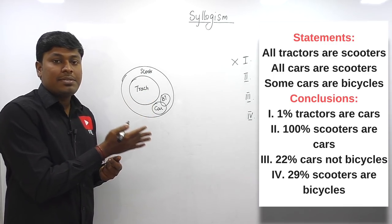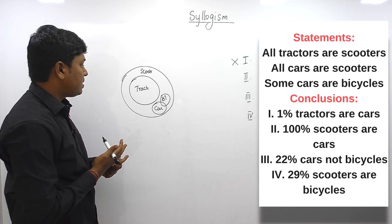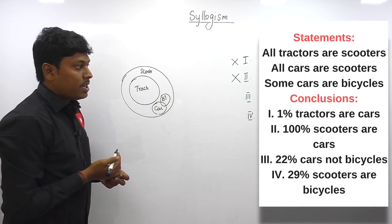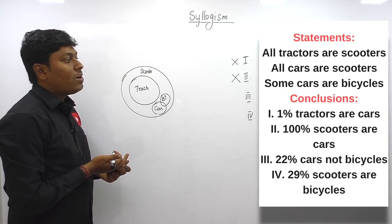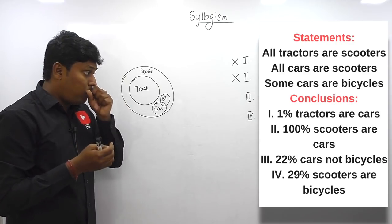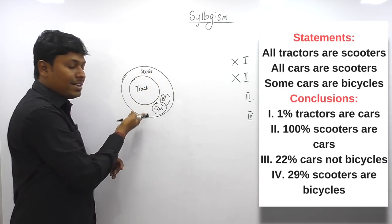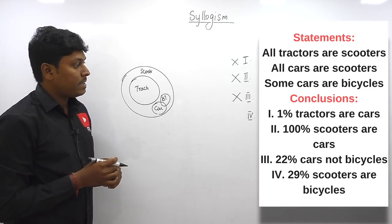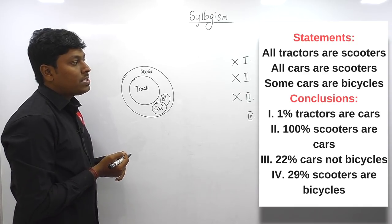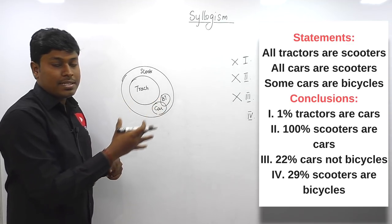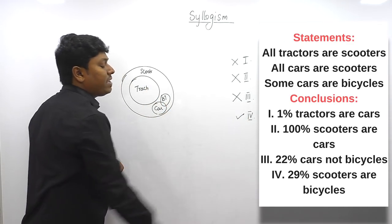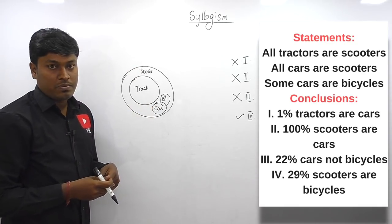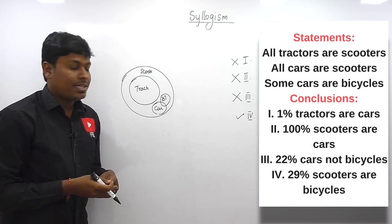Conclusion 2: 100% scooters are cars — all scooters are cars. This is wrong because all cars are scooters is correct, but not the reverse. Conclusion 2 is false. Conclusion 3: 22% cars are not bicycle — some not. All datas are inside a single Venn diagram, so definitely false. Conclusion 4: 29% scooters are bicycle — some scooters are bicycle, which is definitely true. Some scooters are bicycle, some scooters are tractor, some scooters are car are all true. Conclusion 4 follows. Answer: only conclusion 4 follows.